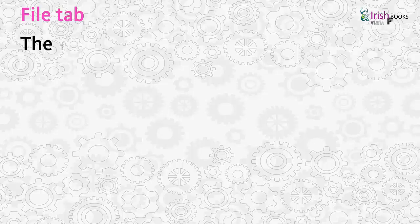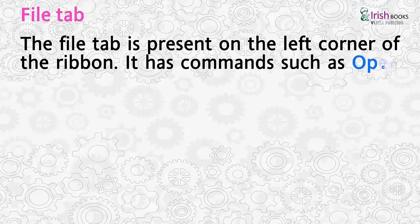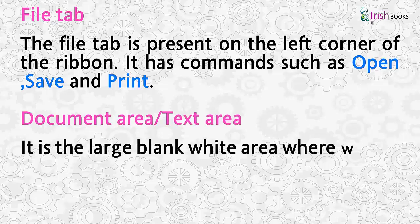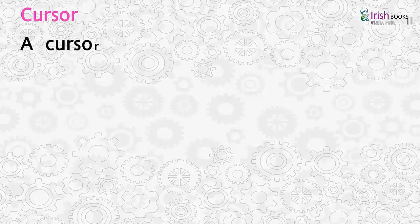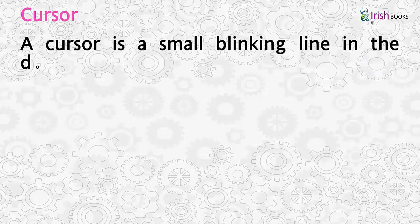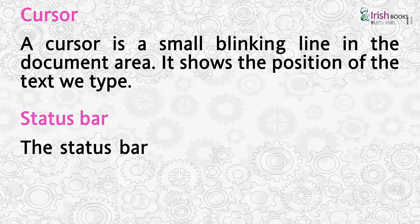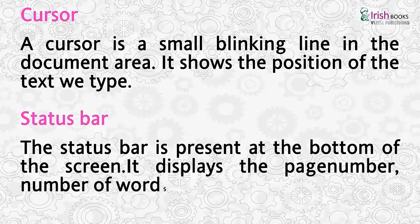File Tab: The File tab is present on the left corner of the ribbon. It has commands such as Open, Save and Print. Document Area: It is the large blank white area where we can type, edit and format the text. Cursor: A cursor is a small blinking line in the document area. It shows the position of the text we type. Status Bar: The status bar is present at the bottom of the screen. It displays the page number, number of words, zoom option, etc.